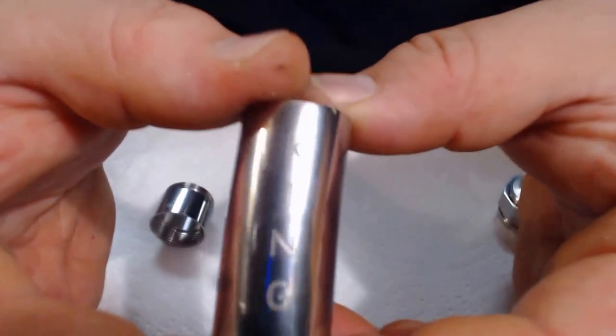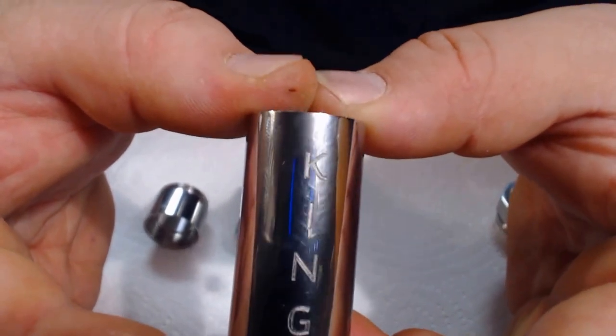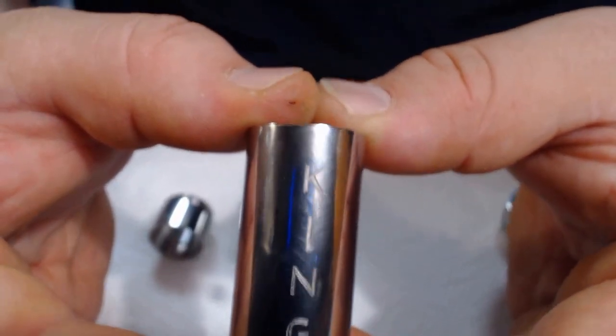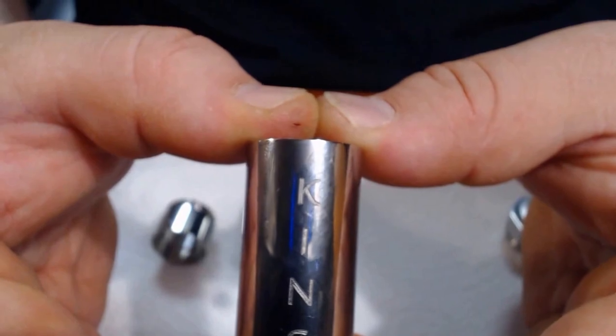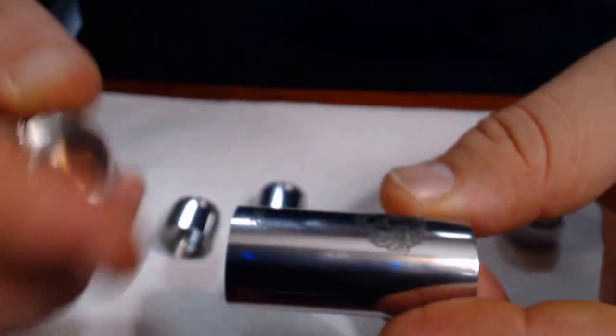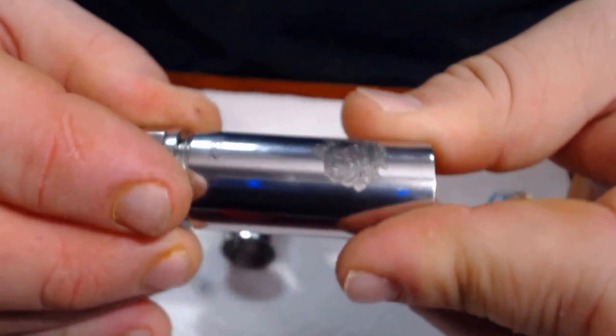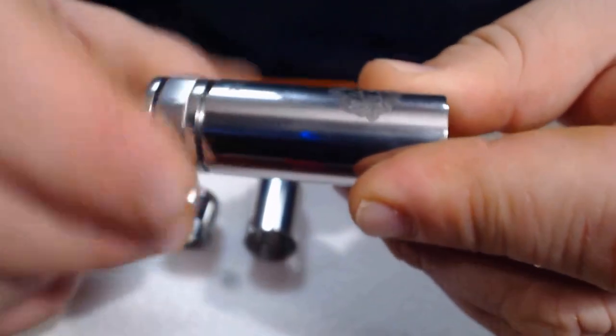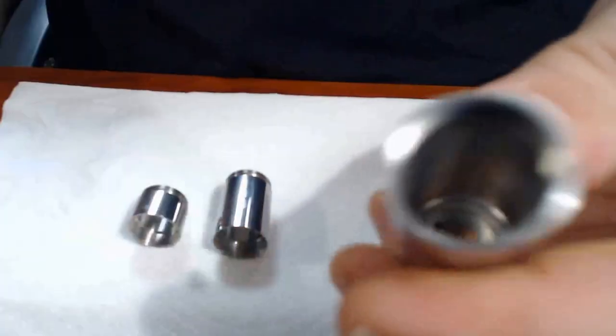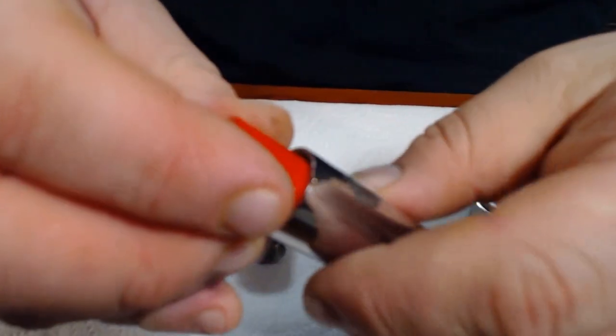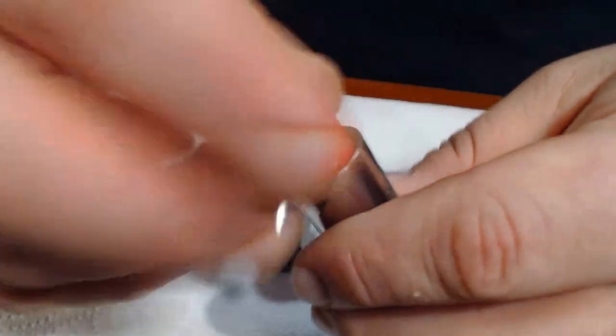On the back of it says King. We'll take the firing button, we'll screw it into the main tubing, and this is what 18350 mode will look like.